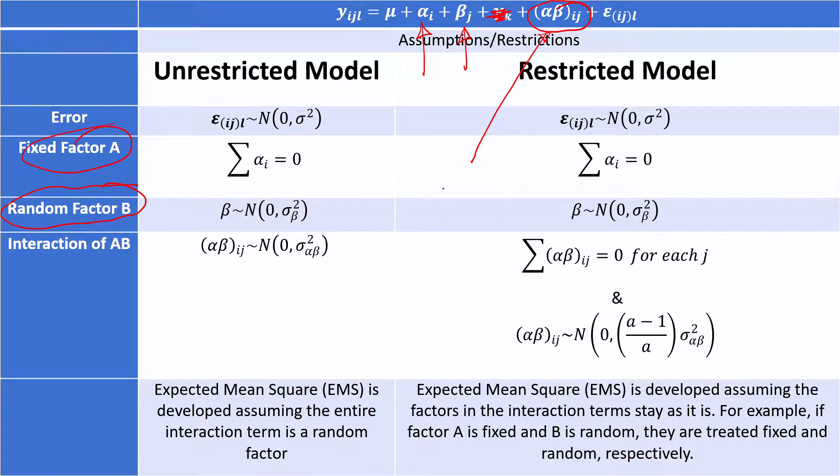And anytime you have an interaction and at least one of the factors is random, the entire term is considered as random. And if that is the case, then there is no restriction. So that is unrestricted model.